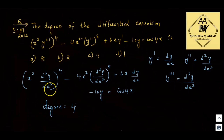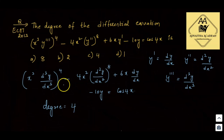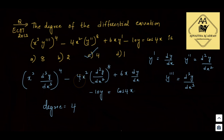The highest order derivative is d³y/dx³ and its power is 4. Therefore the degree equals 4 and option C is correct.